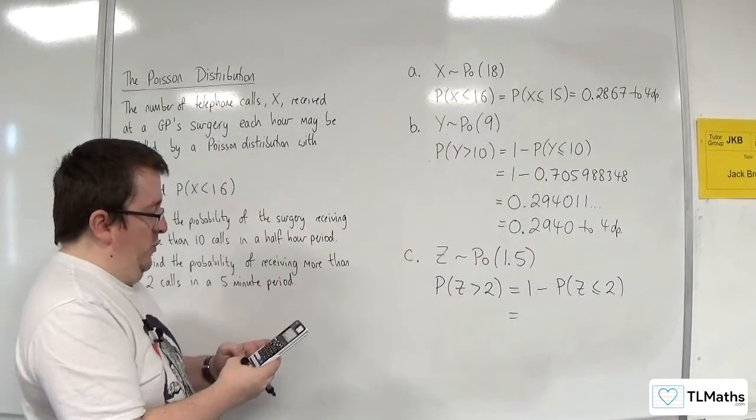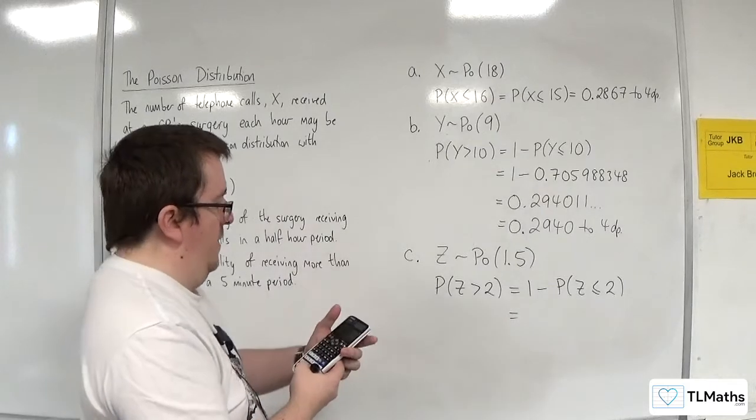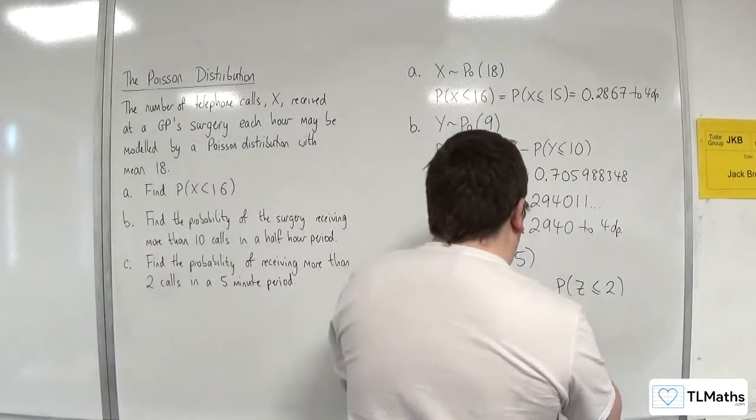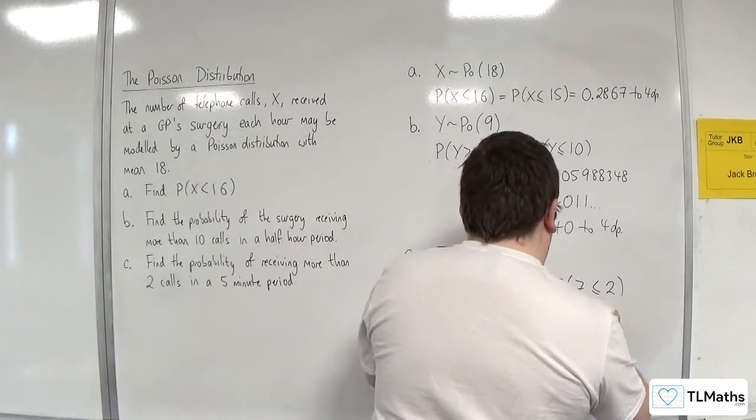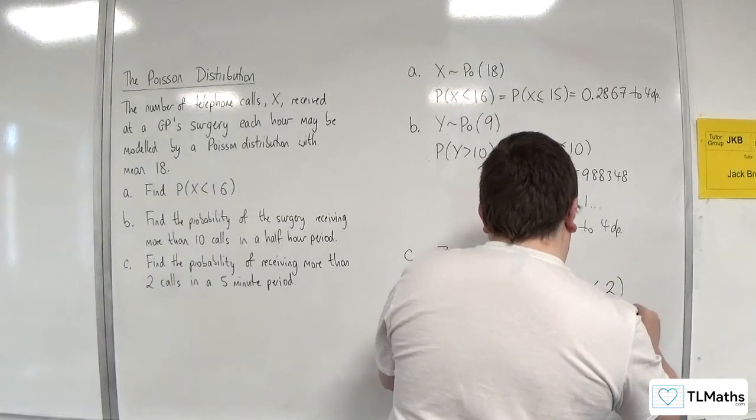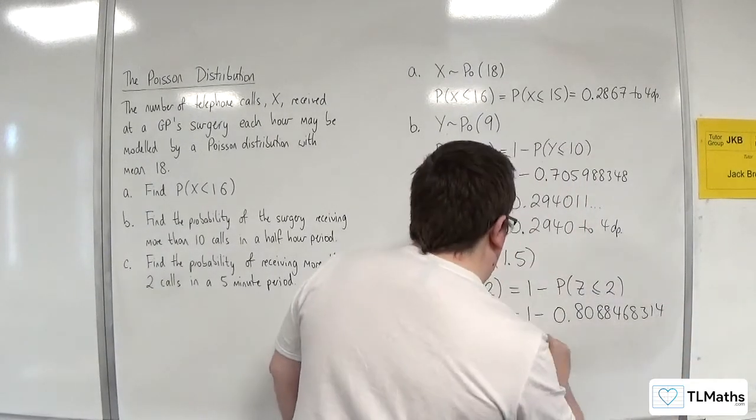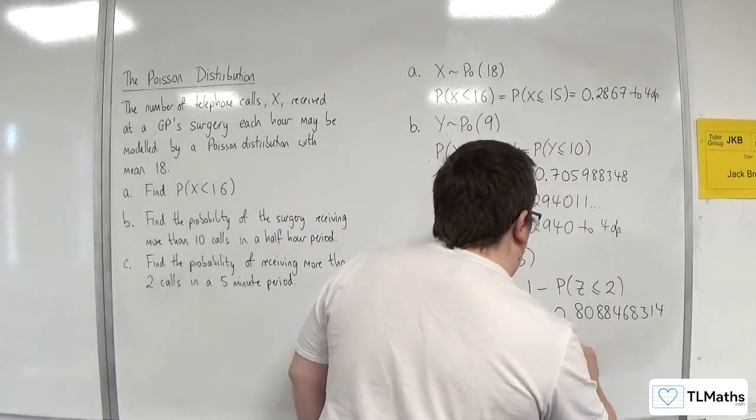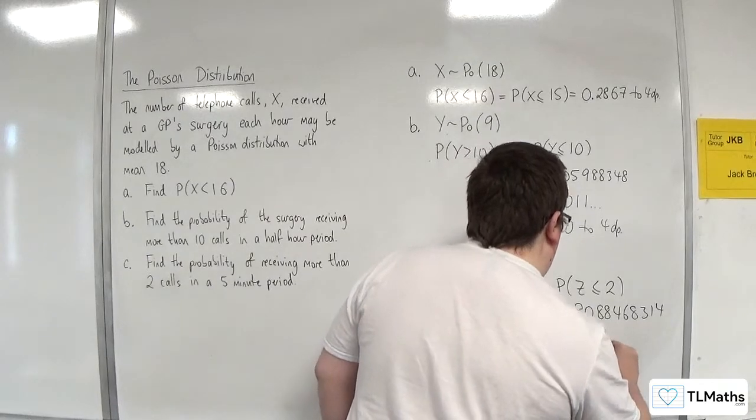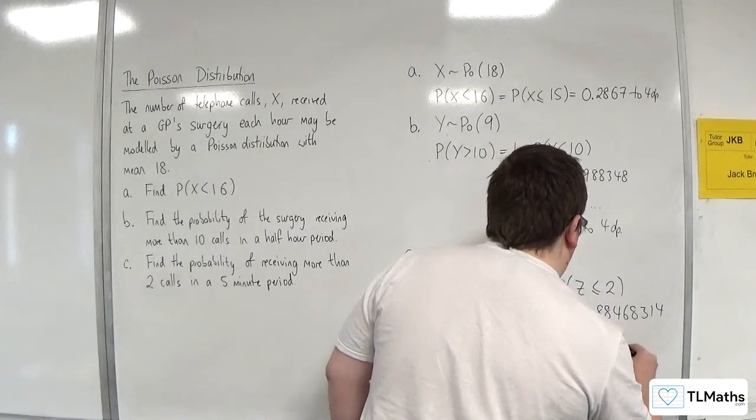So X should be 2. The rate is now 1.5. So 1 take away 0.8088468314. So 0.191153, etc. So 0.1912 to four decimal places.